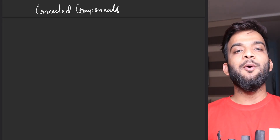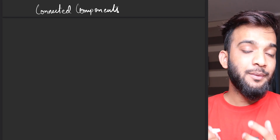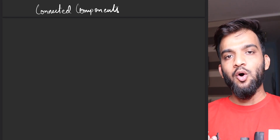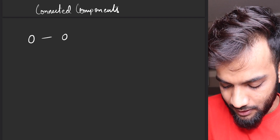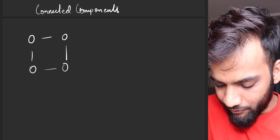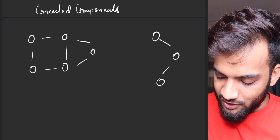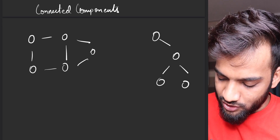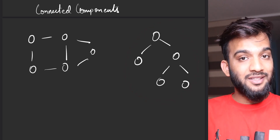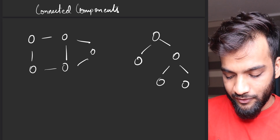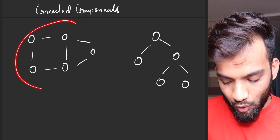In this video we will be learning about connected components in a graph. Now what do we mean by connected components? Till now we have seen graphs like this. You've also seen graphs like this — in the first lecture I told you this is also a graph, it might be a binary tree but this can also be called as a graph. This is a connected graph.